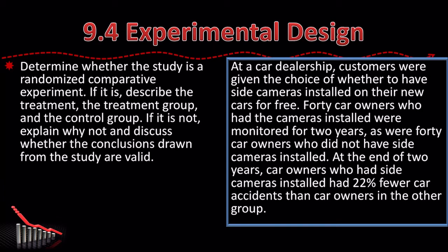Is this randomized? The answer is: not randomized. Why is it not randomized? Because the customers were given the choice — they were not randomly assigned. And so, is it valid or not valid? Well, we don't know. There may be other reasons why the car owners with side cameras had fewer car accidents. For example, maybe the car owners who voluntarily chose the cameras are more likely to be safe drivers anyway, because they have a greater concern for car safety.